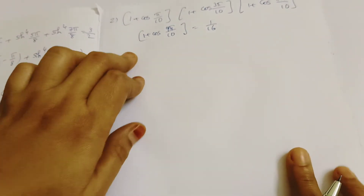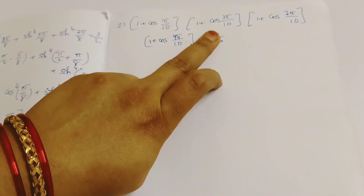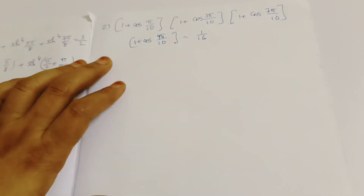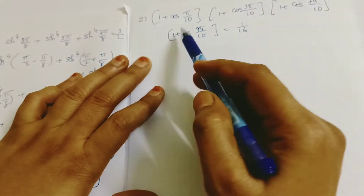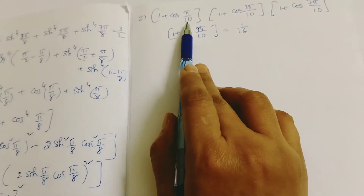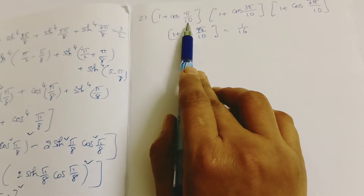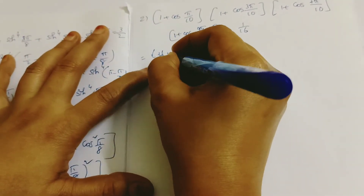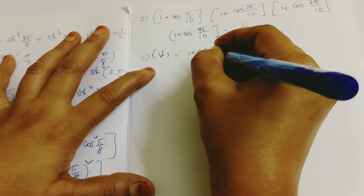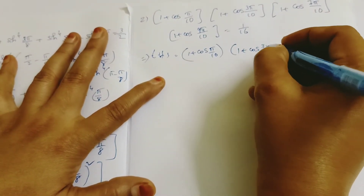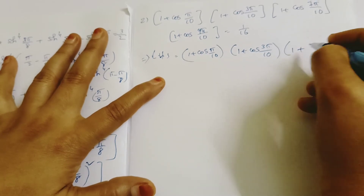Now I am going to the next question. The next type of question is: (1 + cos π/10)(1 + cos 3π/10)(1 + cos 7π/10)(1 + cos 9π/10) = 1/16. How to prove this type of question? I am taking LHS. I write (1 + cos π/10) and (1 + cos 3π/10) as they are.